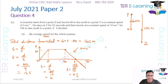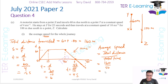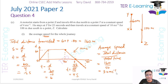So your total time is 50 seconds. Average speed is equal to total distance over total time, which is 160 divided by 50. So my average speed here is going to be 16 divided by 5, which is 3.2. So the average speed here is 3.2 meters per second.